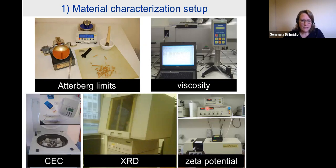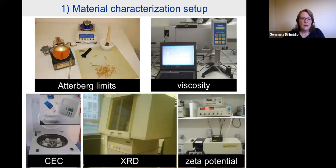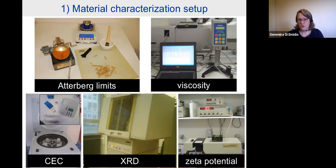Another parameter normally tested to qualify a clay is the cation exchange capacity. The cation exchange capacity represents the ability of a clay to exchange its ions — for example sodium for calcium. A very high cation exchange capacity is an index of good quality clay because it represents a very high negative surface neutralized by sodium cations. However, a high cation exchange capacity also means the good-quality sodium clay can be easily damaged due to cation exchange with calcium.